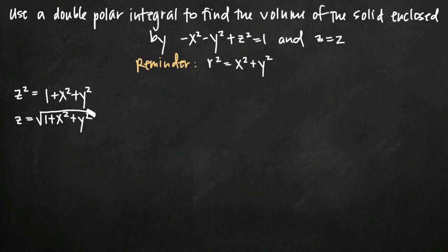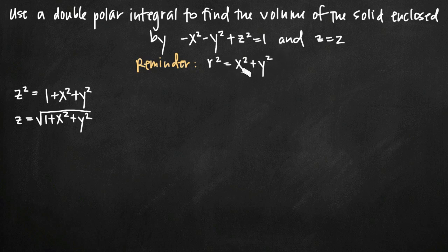Now we have two equations in terms of z, which is important because in this type of problem with three variables we need two equations in terms of z for our integral. We've been asked to use a double polar integral, so we need to convert to polar coordinates. Using the standard conversion formula r squared equals x squared plus y squared, we can replace x squared plus y squared inside our square root and write z equals square root of 1 plus r squared.